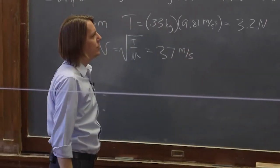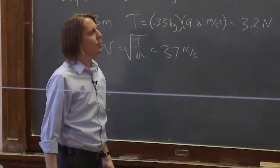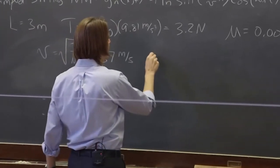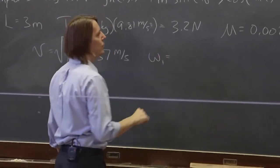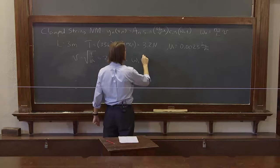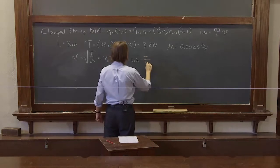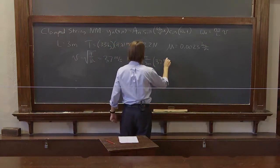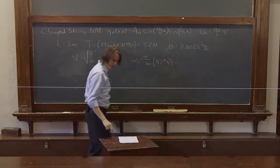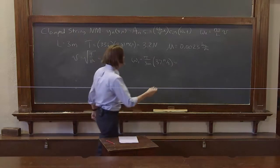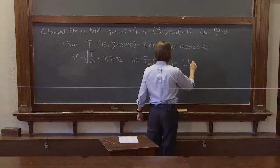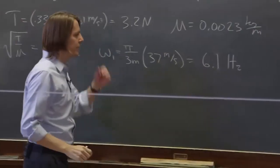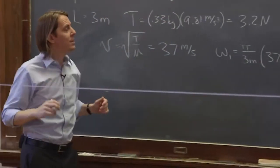And we could also calculate where the normal modes, at what frequency, they should occur. For example, the first one, omega_1, is the fundamental normal mode, n equals 1, so it's pi over 3 meters times 37 meters per second, which, if you throw in your calculator, is a little over 6. It's about 6.1, or we could just call it 6 hertz, 6.1 hertz, around 6.